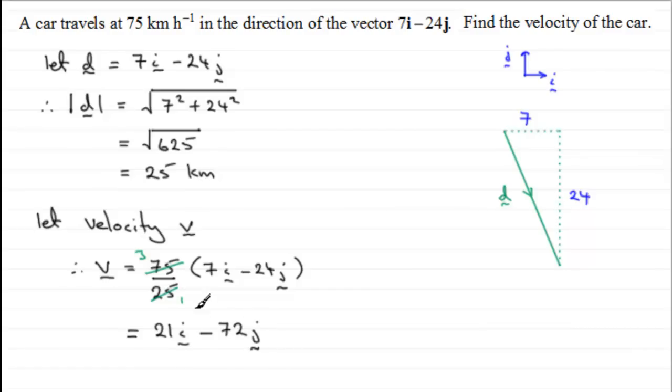If you check out the magnitude of that by doing Pythagoras' Theorem, the square root of 21 squared plus 72 squared, you will find that you'll get 75. Okay?